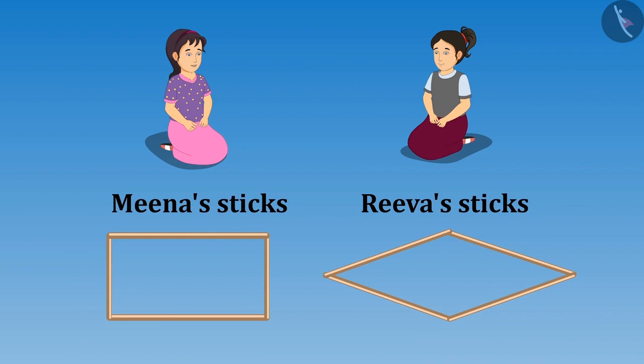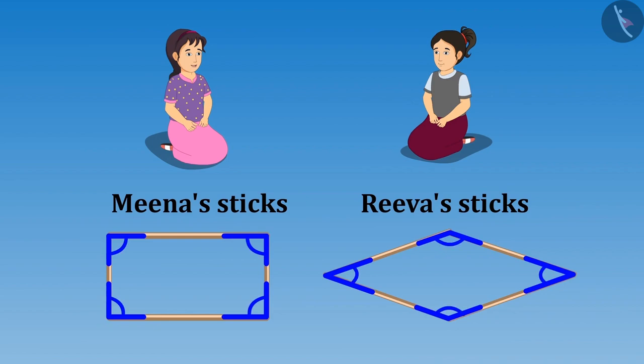Did you see Riva? There are four corners in our figures and these four angles are formed in four different corners. Still both have different shapes. Oh yes. But why is it so sister?